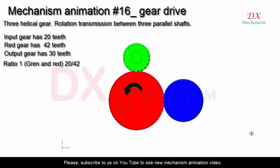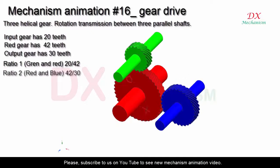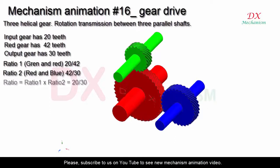Ratio 1, green and red: 20/42. Ratio 2, red and blue: 42/30. Overall ratio: 20/30.